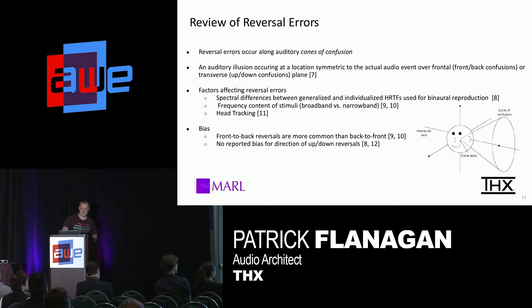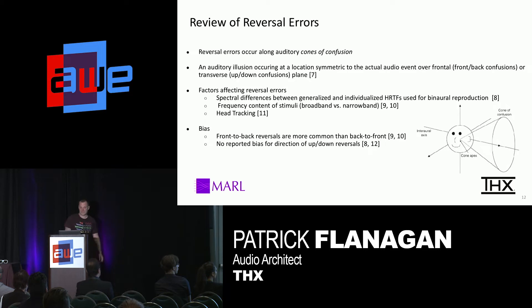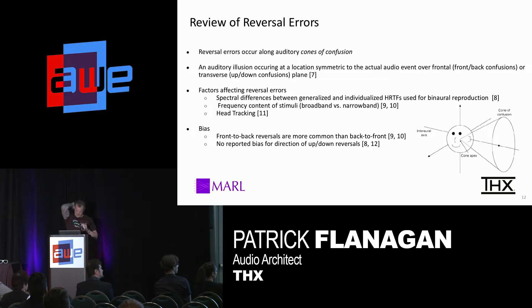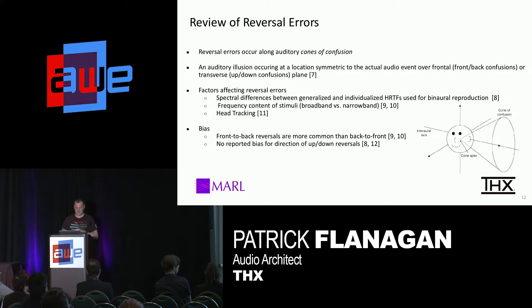Reversal errors occur along the auditory cone of confusion, and in the median plane — an auditory illusion occurring at a location symmetric to the actual audio event over the frontal transverse plane. Factors affecting reversal errors include spectral differences in the HRTF — a mismatch between how a particular audio stimulus was coded versus how your ears are actually interpreting that spectral cue — as well as frequency of content and head tracking.